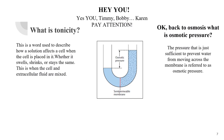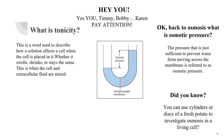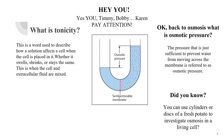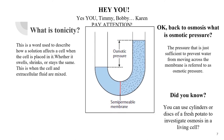Osmolarity is the comparison between a solution and a cell. There is also something called tonicity, which we use to describe when a solution affects a cell when the cell is placed in it. Whatever happens to it — whether it swells, shrinks, or stays the same — it is still tonicity. This is when the cell and an extracellular fluid are mixed. Back to osmosis: there is also something called osmotic pressure. Osmotic pressure is the obstacle that prevents osmosis from happening — because of this pressure, water cannot move from low to high solute concentration. Fun fact: you can actually use cylinders or discs of a fresh potato to investigate osmosis in a living cell.